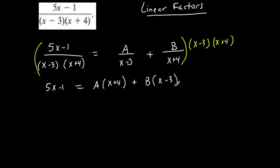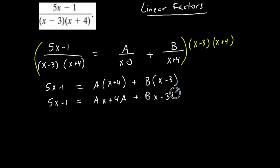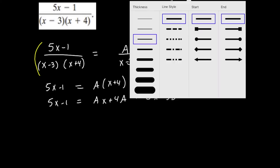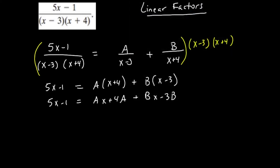So now I have a basic equation rather than fractions. I'm going to distribute: A gives Ax plus 4A, and B gives Bx minus 3B. Then I have to create a situation that allows me to solve for A and B. There are two unknowns, so I need two different equations — a system of linear equations with two variables.